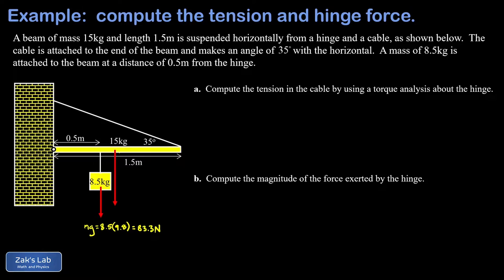We do the same for the center of mass of the beam. With 15 kilograms times 9.8 meters per second squared, we get 147 newtons for the weight of the beam. For computing the torque exerted by gravity on the beam, we pretend all the mass is concentrated at the center of mass. The entire beam is 1.5 meters long, so the center of mass is at 0.75 meters.